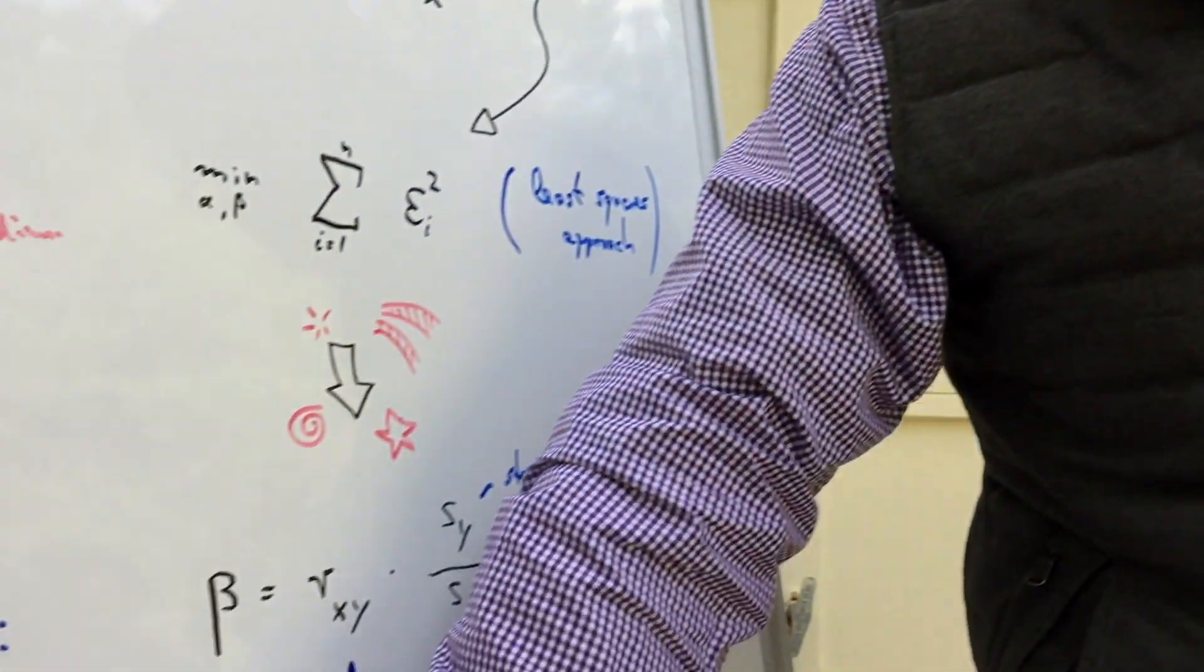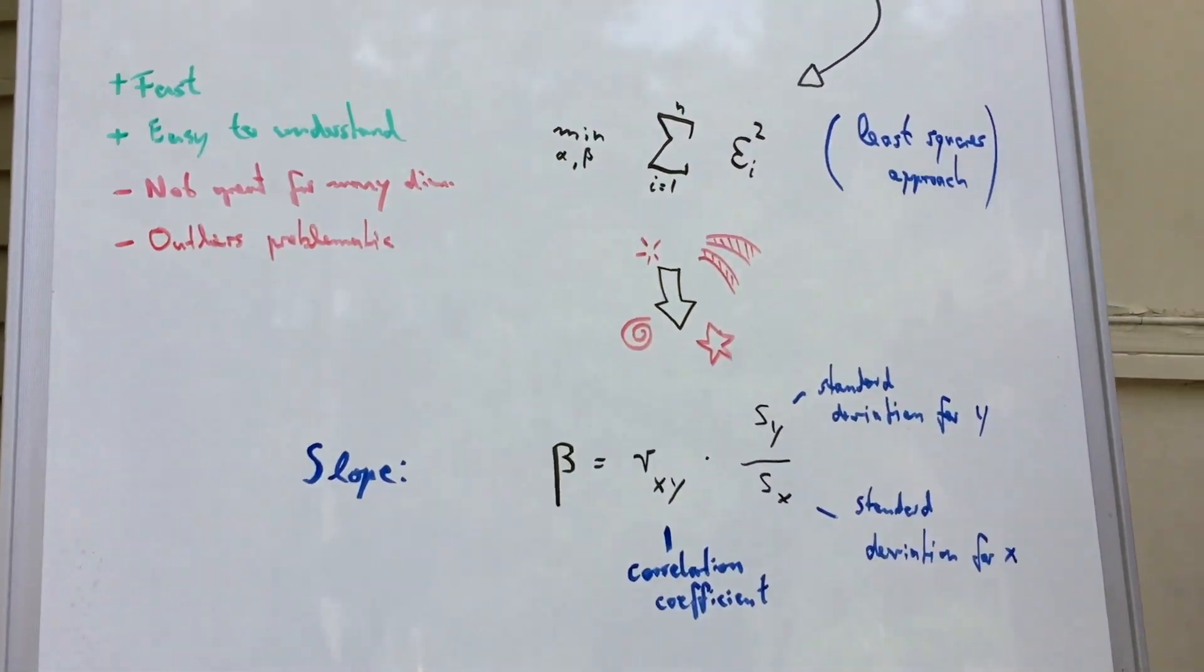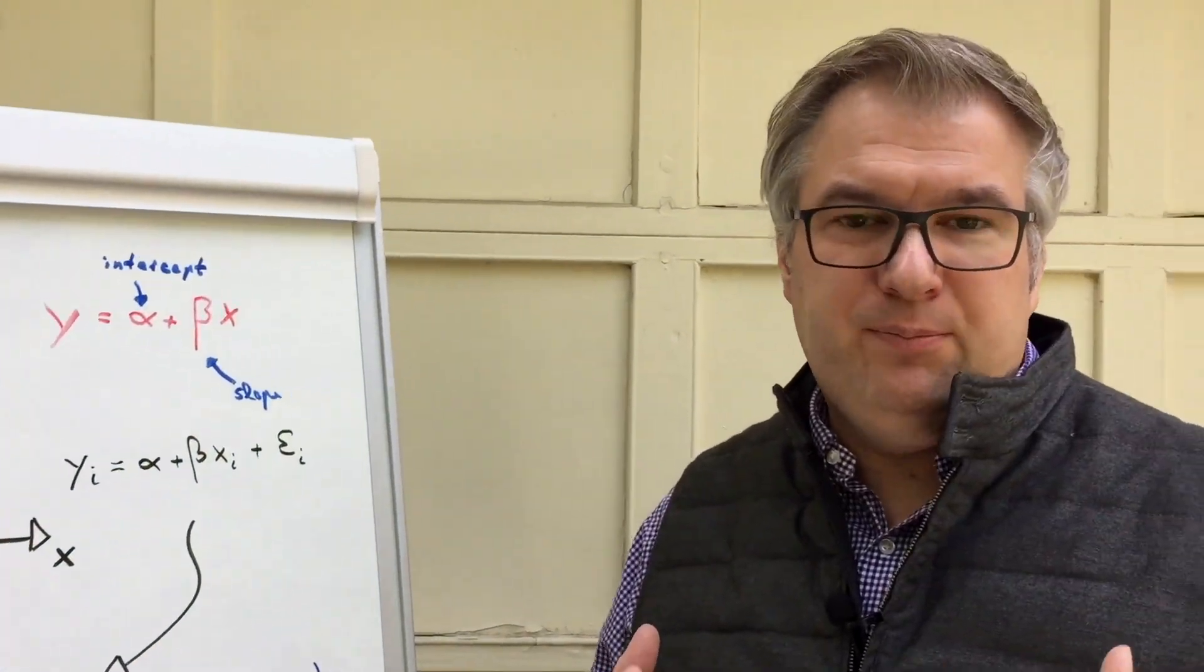So that's working very easily in one dimension. So what can we do for multiple dimensions? Well, for multiple dimensions it's very similar. It's a simple technique which is called ordinary least squares. You can look it up if you want to know the details, but the basic ideas are pretty much the same.